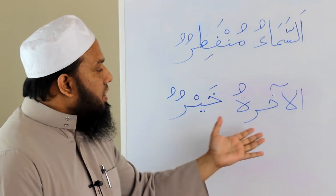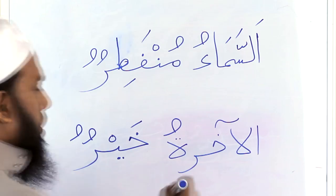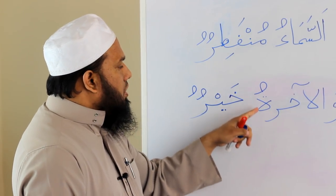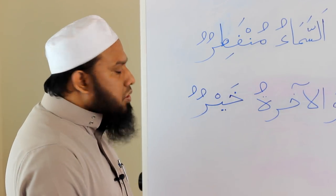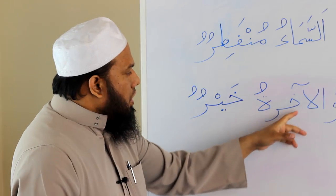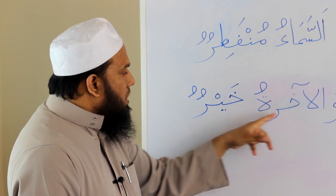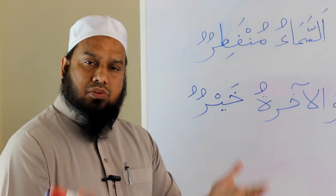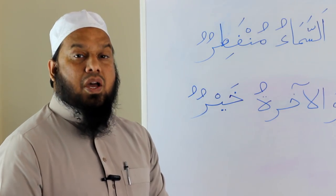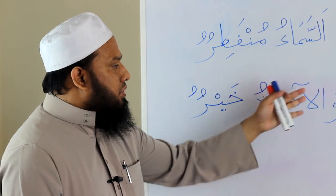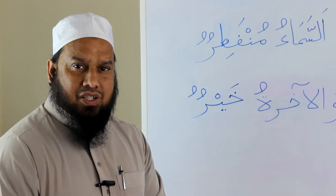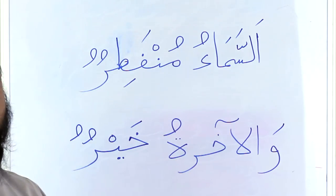Looking at the next verse: Wal-Akhiratu — and means waw here. Al-Akhiratu is Mubtada, and Khayrun is Khabar. Al-Akhiratu has Alif-Lam; Khayrun does not. To summarize: we need two nouns — one with Alif-Lam as Mubtada, and one without Alif-Lam as Khabar. Unless it's a proper noun — then it's already definite and you don't need to add the definite article. Alhamdulillah, this is how we make Jumla Ismiya.